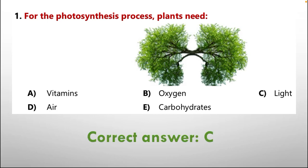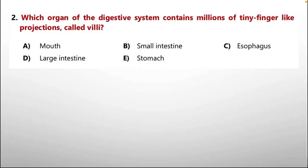Question number two: which organ of the digestive system contains millions of tiny finger-like projections called villi? Options are: A: mouth, B: small intestine, C: esophagus, D: large intestine, E: stomach.